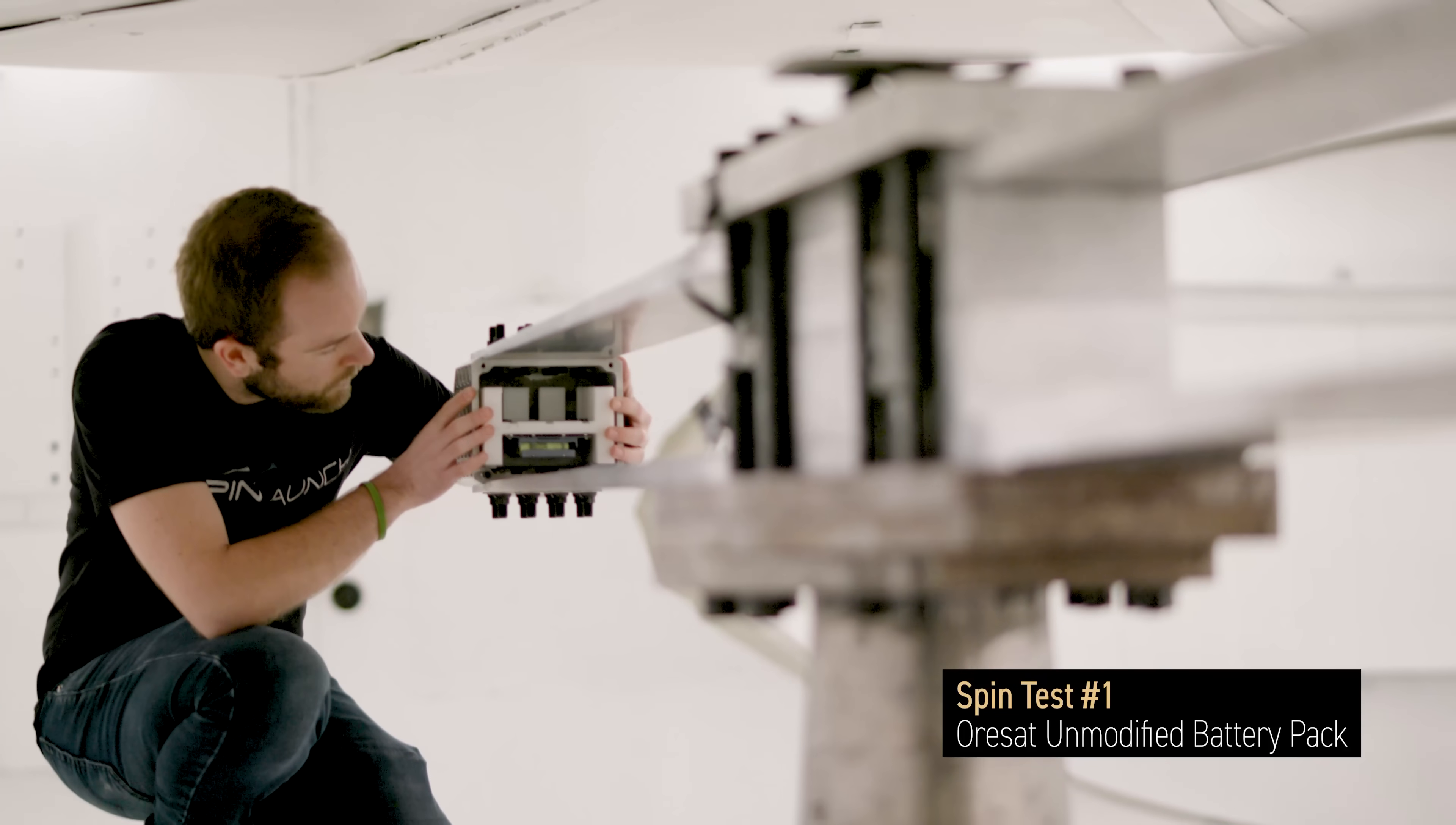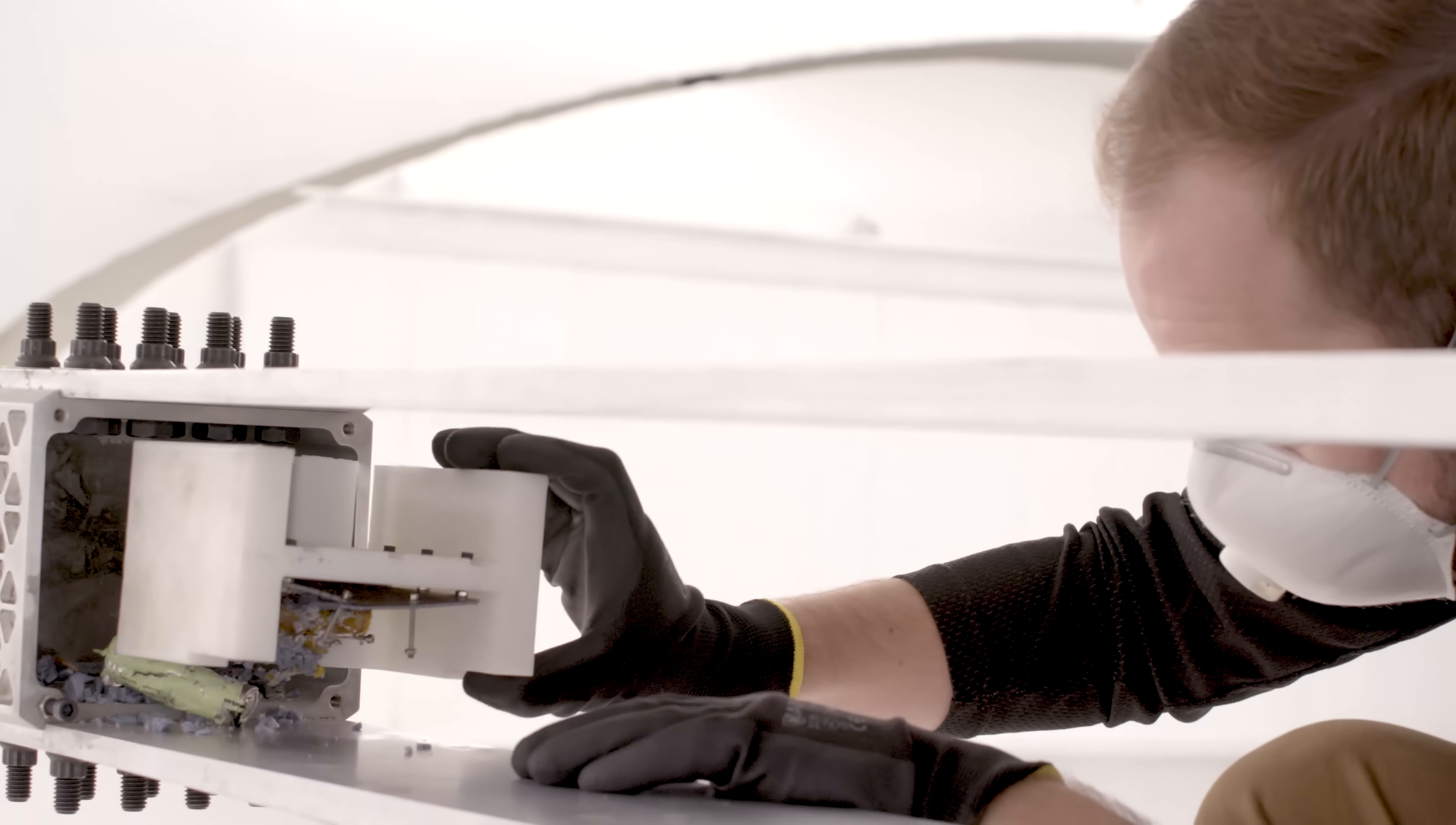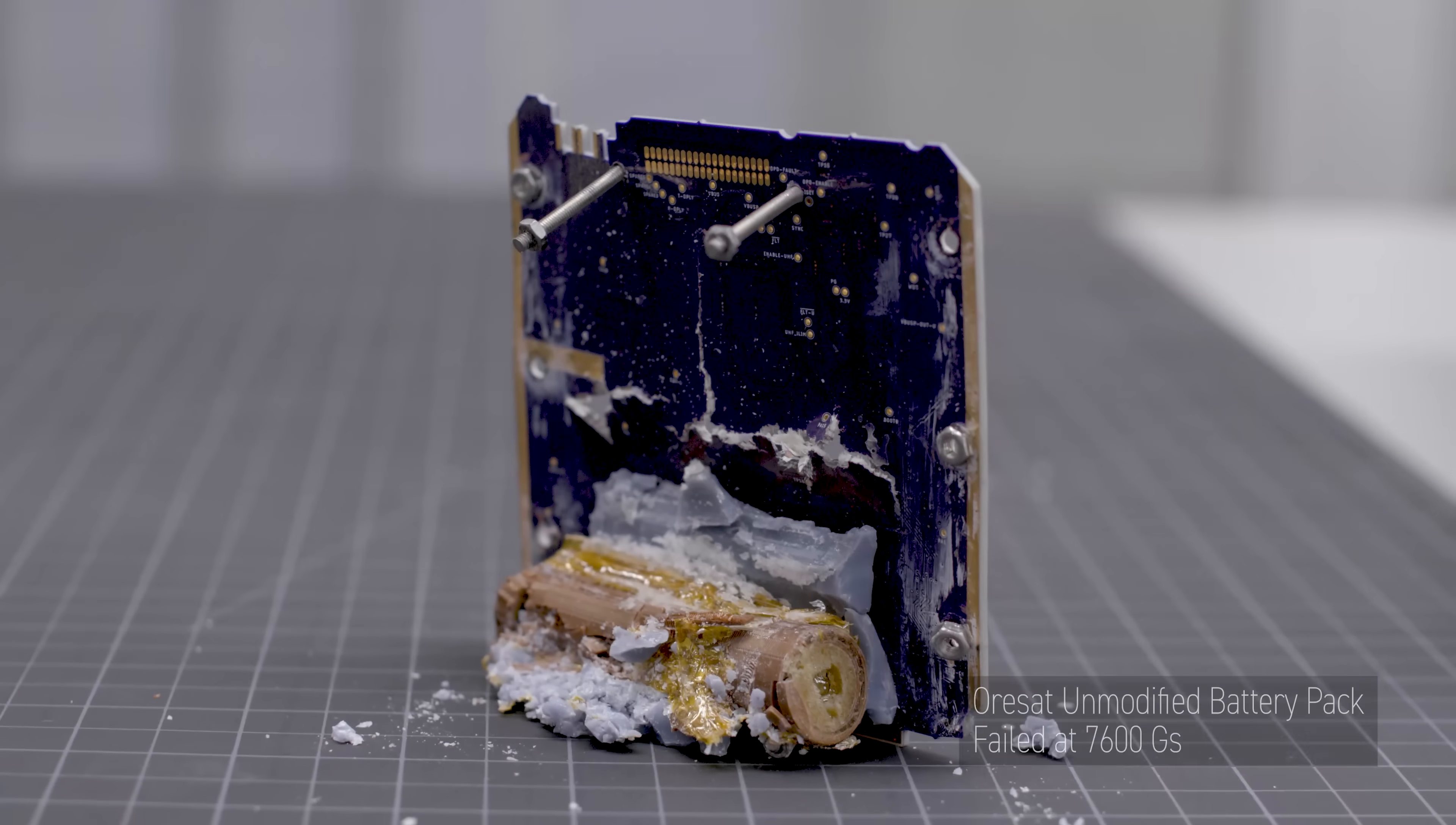We as a group didn't think they were going to go past 100 Gs. And I think you said they reached 7,000 Gs. And we were shocked. For a lot of components, they're already pretty close to being G-hardened. The university team was able to design a battery pack that survived 7,600 Gs, no modifications, by accident.